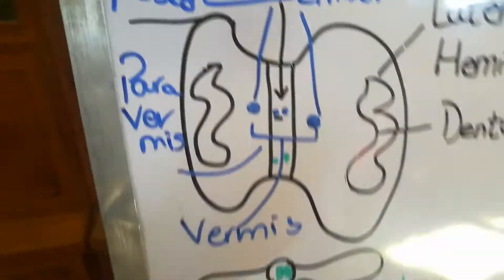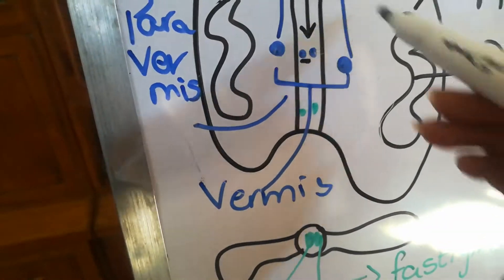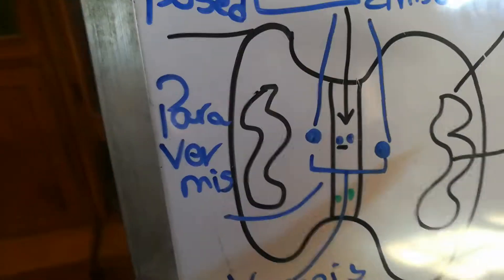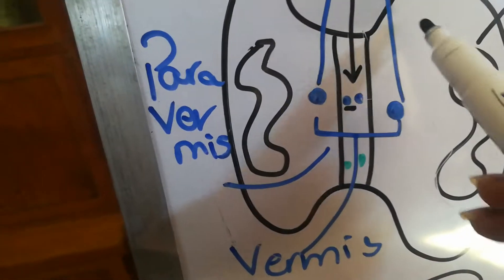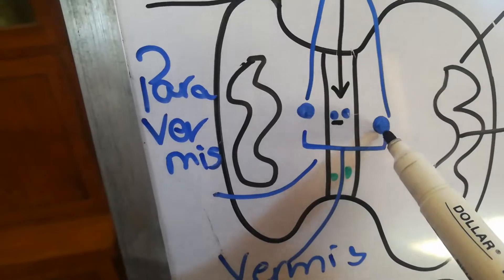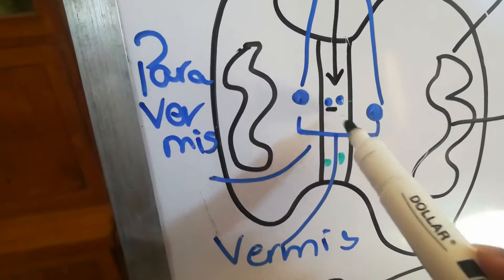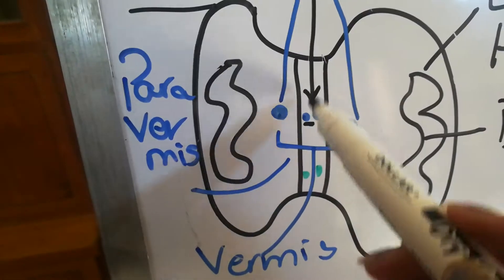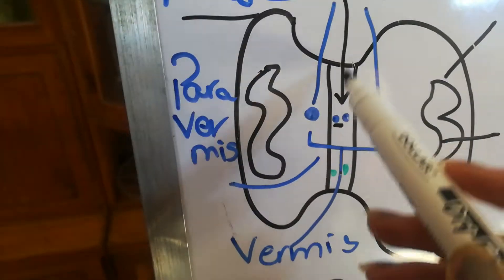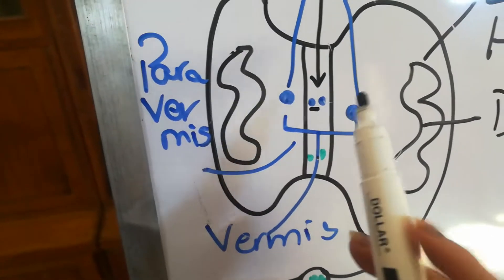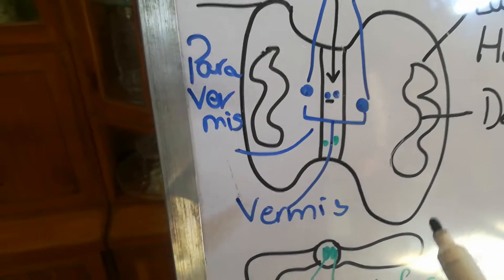The emboliform nucleus is present partially near the vermis and also in the lateral hemisphere. This area close to the vermis and in the lateral hemisphere is called the paravermal area. The nuclei within the cavity containing the cerebral core are in the vermis. The globose nucleus is located in the vermis.